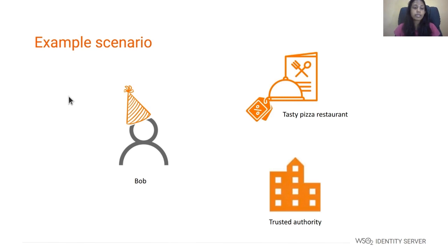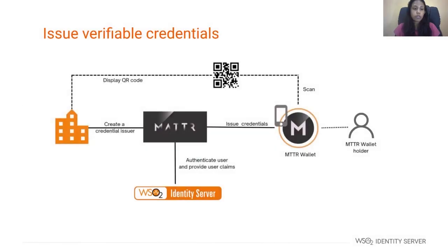Considering the complete scenario, you can see it consists of two parts. First, the holder claims verifiable credentials from the issuer. Then the holder presents the requested credentials to the verifier. Here, the organization wants to offer verifiable credentials to Bob, where MATTR supports the credential issuing and managing, while WSO2 Identity Server authenticates Bob and provides the required claims to offer the credentials. First, the organization creates a MATTR issuer to offer the credentials and then generates a QR code. The user who wants to claim the credentials can scan the QR code via the MATTR mobile wallet. It is required to authenticate with the WSO2 identity provider to claim the verifiable credentials.